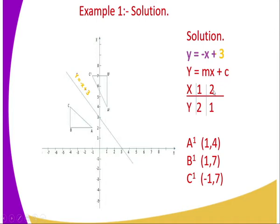For x = 2, you substitute: y = −(2) + 3, which becomes minus two plus three. After addition, the value of y is one. Therefore, the coordinates of the mirror line are (1, 2) and (2, 1). You plot those two points and draw a straight line through them. That is the mirror line y = −x + 3, which you can see is well reflected on the diagram.